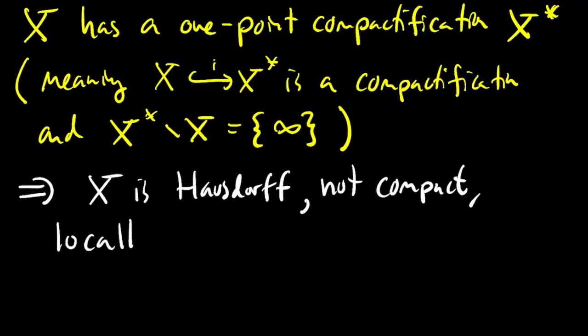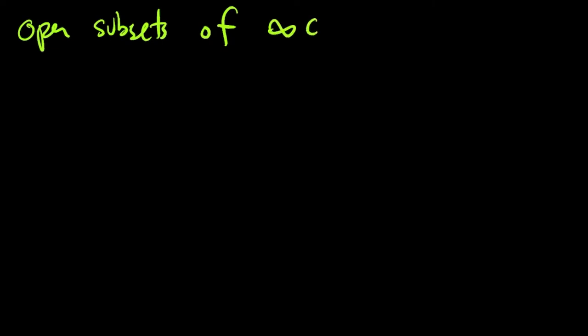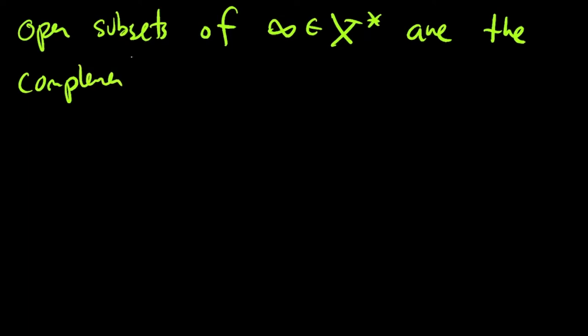If X has a one-point compactification, then X must be Hausdorff, not compact, and locally compact. X has to be Hausdorff because subspaces of Hausdorff spaces are always Hausdorff. X has to be not compact because if X were compact, it would be a compact subspace of a Hausdorff space and therefore closed, and its closure would be itself instead of X*. To understand why X has to be locally compact, it helps to see that the open subsets containing infinity inside X* are precisely the complements of compact subsets of X.